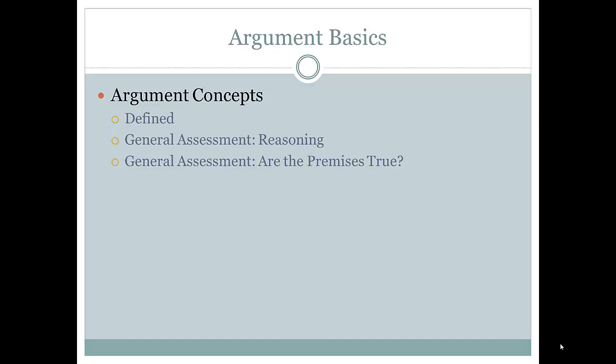Now when you make an argument, what you're presenting is a claim that is supposed to be supported by the other claims being presented. The claim that's being argued for, supported, is known as the conclusion, and an argument can have one and only one conclusion. To find the conclusion of an argument, you ask: what is the point? What is the person trying to prove? What are they trying to establish?